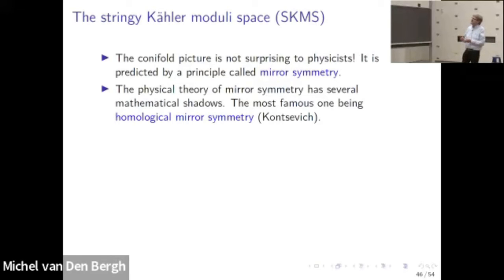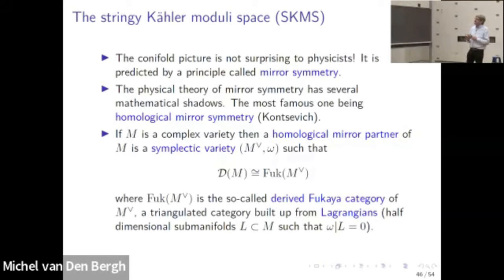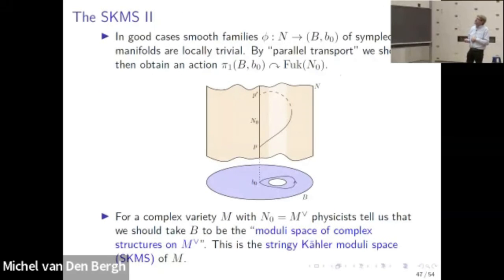For physicists this is not at all surprising — it follows from something called mirror symmetry. Mirror symmetry has some mathematical interpretations, one of which is homological mirror symmetry due to Maxim Kontsevich. Very sketchily: homological mirror symmetry is about a relationship between complex and symplectic geometry. If we have a complex variety, then a homological mirror partner is a symplectic variety such that the derived category of coherent sheaves equals the Fukaya category of the mirror dual. The Fukaya category is some kind of triangulated category built up from Lagrangians.